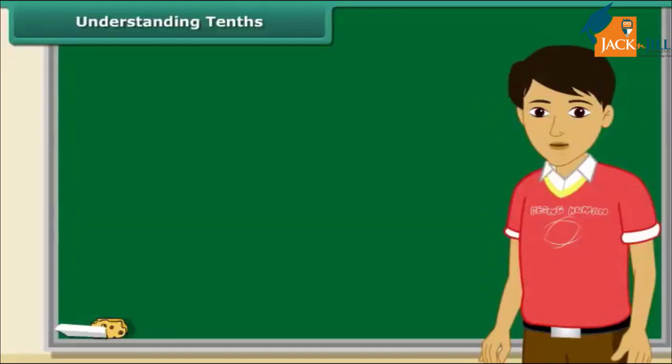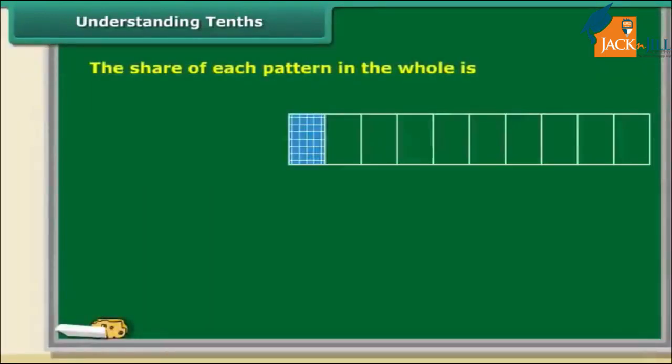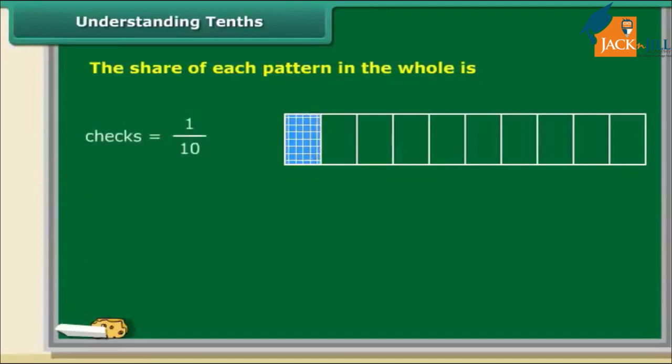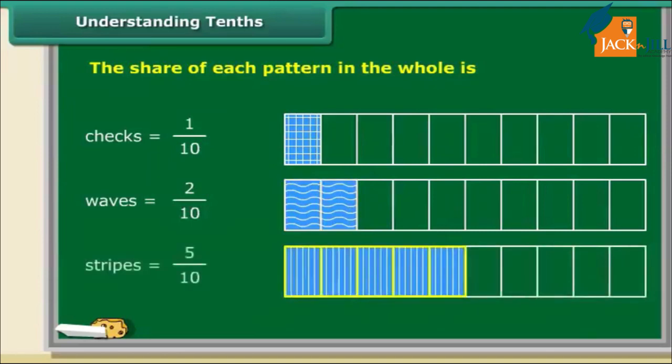Let us understand the concept of decimal using fractions with denominator 10. Consider the fraction bars. In the first bar, only one out of the ten blocks has checks. In the second bar, only two out of the ten blocks have waves. Similarly, in the third bar, five out of the ten blocks have stripes. In all these cases, we express the share of the patterned blocks to the total blocks as a fraction with denominator 10. Such fractions are called tenths.